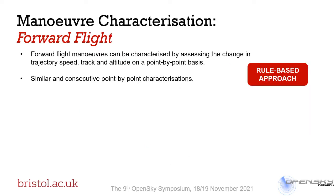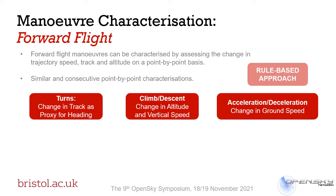Forward flight manoeuvres can be characterised in the same way as many previous studies, where we look for changes in trajectory speed, track, and altitude on a point-by-point basis. These are known as rule-based approaches, where we develop thresholds on trajectory parameters to identify whether a manoeuvre occurs, and then build up manoeuvre blocks by finding similar and consecutive point-by-point characterisations. For turns we look at a change in track; for climb and descent, a change in altitude and non-zero vertical speed; and acceleration/deceleration manoeuvres are found by a change in ground speed.